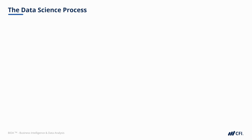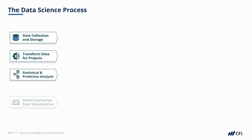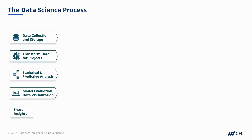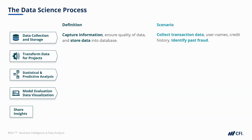Let's put skills aside and look at how we turn data into insights — roughly a five-step process. First is data collection and storage: capturing information, ensuring its quality, and storing it in accessible locations like databases. Suppose we want to predict and identify fraudulent transactions. Before anything else, we need to collect data about past transactions — usernames, credit history, and other data. Importantly, we also need to indicate which past transactions were fraudulent, so we can learn to spot the patterns. After all, if we can't define which transactions were fraudulent in the past, how can we make those predictions in the future?